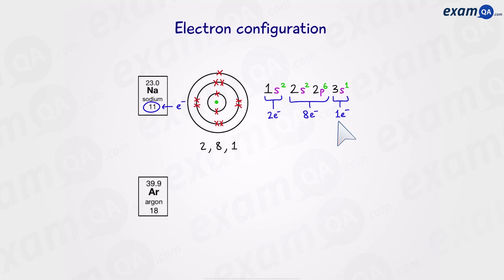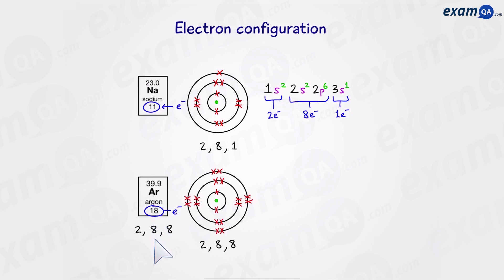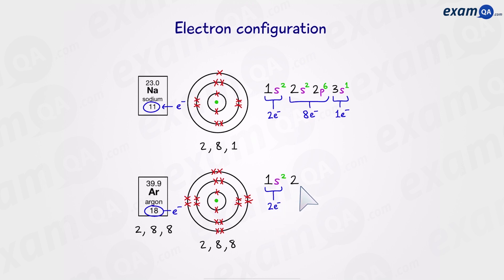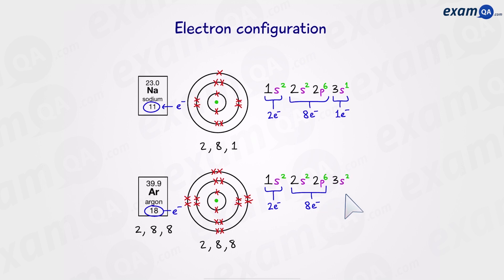Let's try another example. Argon has 18 electrons arranged as 2, 8, 8. In the first shell we open up an s subshell and put 2 electrons. Moving to the second shell, we need 8 electrons: first an s subshell with 2 electrons, then a p subshell with 6 electrons — giving us 8. Moving on to the third shell, we again start with an s subshell and put 2 electrons. However, we need 8, so in the third shell we also have a p subshell with 6 electrons, giving us 8.